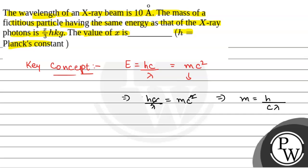We have been given mass is x h by 3 kg. So x times h by 3 equals h by c lambda. Now h will cancel. So x will be equal to 3 by c lambda.